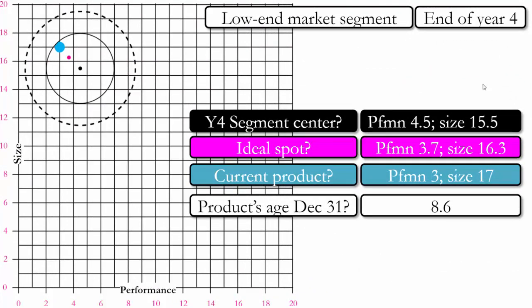At the end of year four, the product is still within the fine cut but getting very close to exiting it. Even though our age is 1.6 years older than the ideal age of seven, a revision at this time would cut the age in half to 4.3, which is 2.7 years removed from the ideal age. However, we do not want our product to move out of the fine cut, so it seems like a good idea to launch a revision late in year four or early in year five.